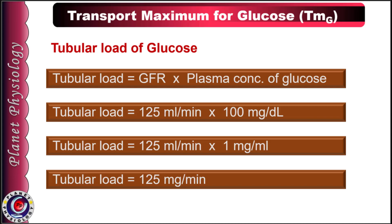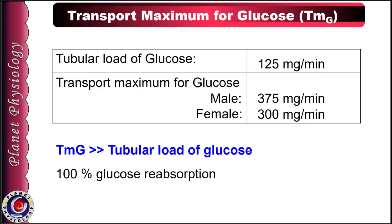The normal value of transport maximum for glucose is 375 mg per minute, which is way beyond the tubular load of glucose. Hence, the entire filtered glucose is reabsorbed back into the blood by the proximal convoluted tubule, meaning there is 100% glucose reabsorption by the tubules.